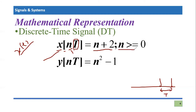There is a second example: Y(NT). Y is a discrete time signal, N is the domain, T is the sample space, and N squared minus one is the definition — or amplitude — of the signal at any sample point. For this signal, no interval is defined because this signal is defined for all domain from minus infinity to plus infinity.